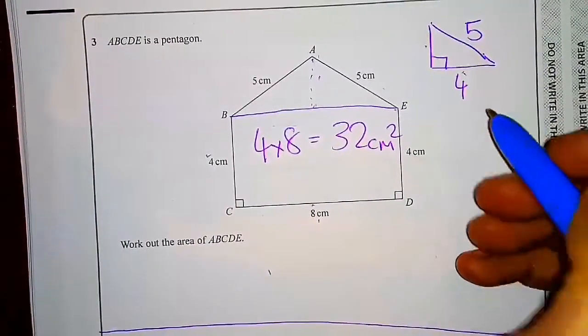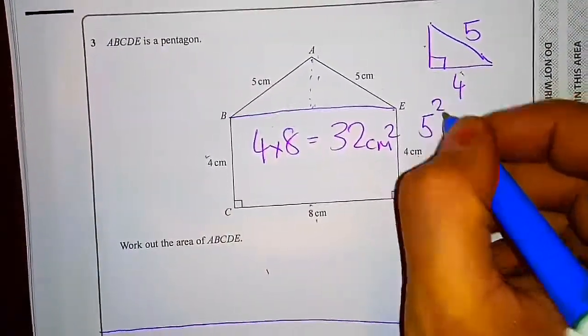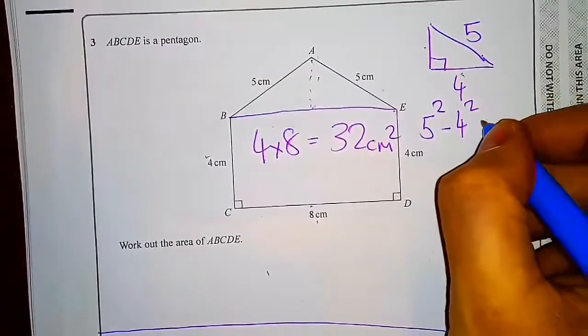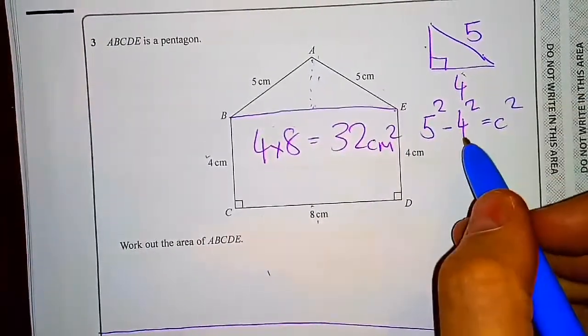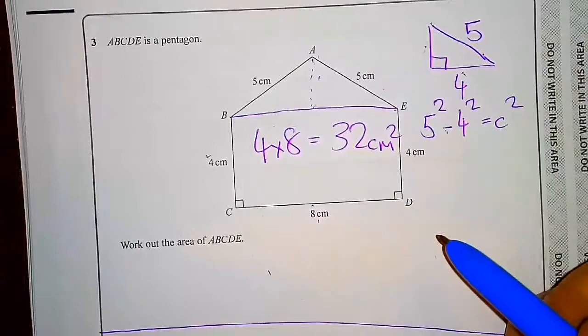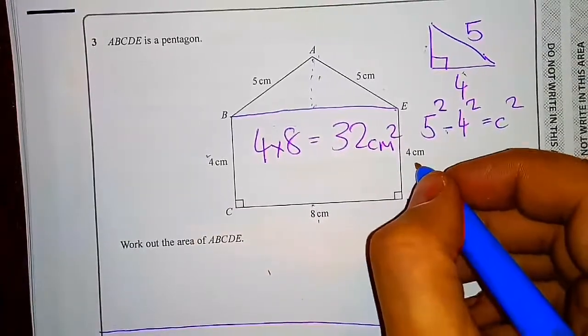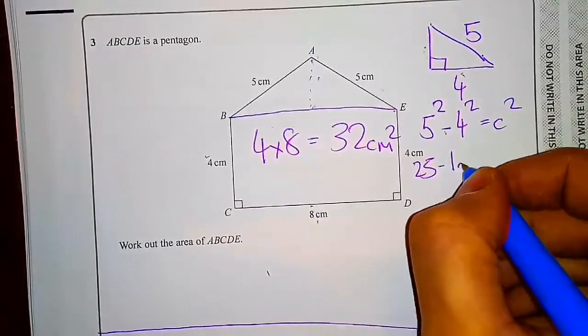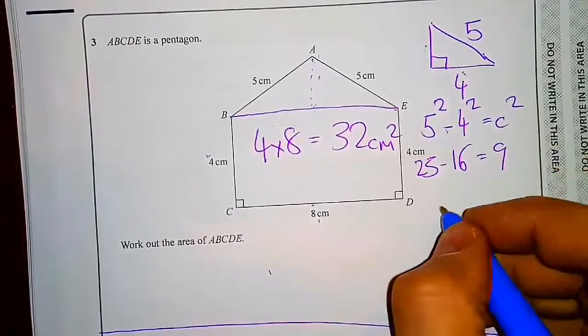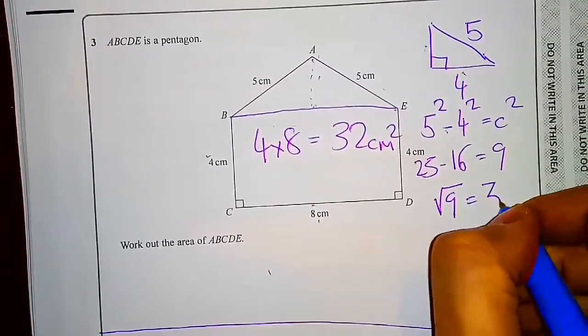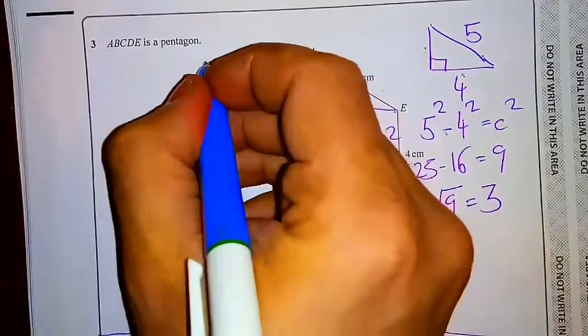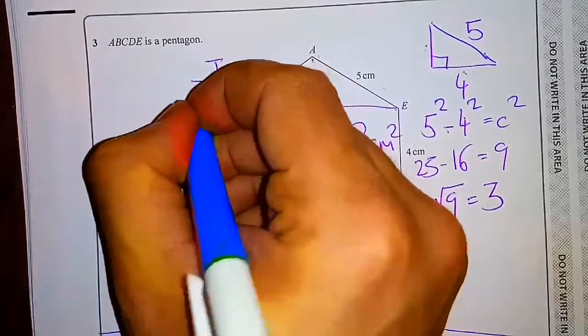Now I use Pythagoras to work out the other shorter side, which would be 5 squared minus 4 squared equals c squared. Remember, since this is the shorter side we're working out, 5 squared is 25, 4 squared is 16, equals 9. So you've got square root of 9, which is 3 - has to be a positive 3 - which now means my height is 3.